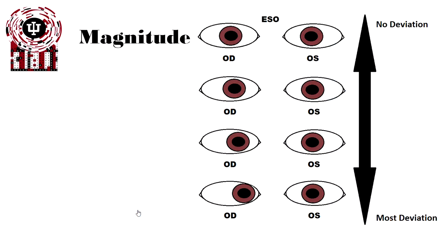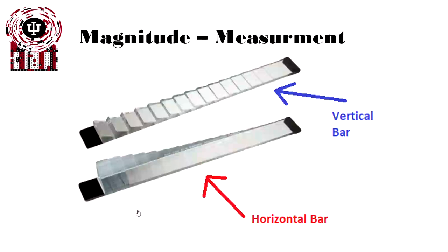The next step is the magnitude of the tropia or phoria. There can be a significant magnitude regardless of whether it's a tropia or phoria. Here we have an example of an eso-deviation. Starting at the very top, we have no deviation whatsoever, and as we move down, we have more deviation — the most deviation. The eye moves in, and this is determined through prism diopters. We actually measure that using prism to quantify how much deviation the eye has. Here we have two examples: one's a vertical bar and one's a horizontal bar.